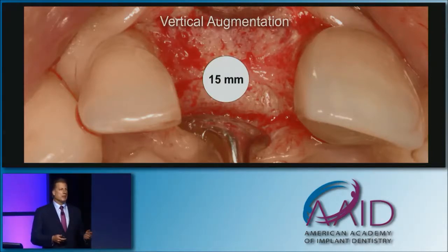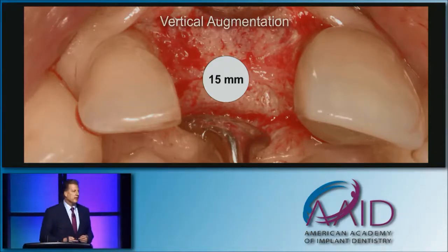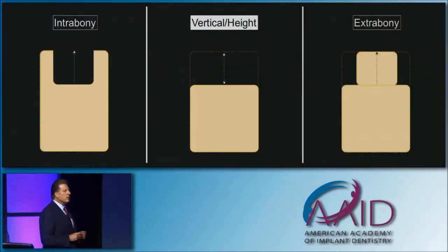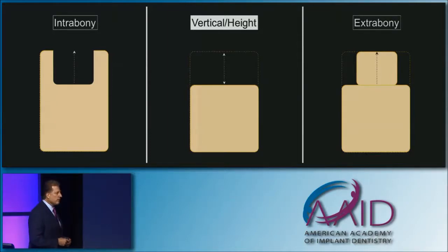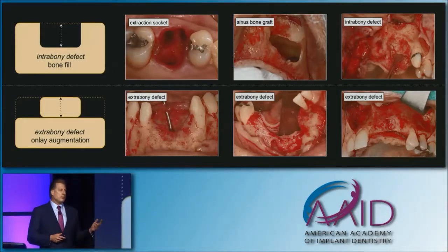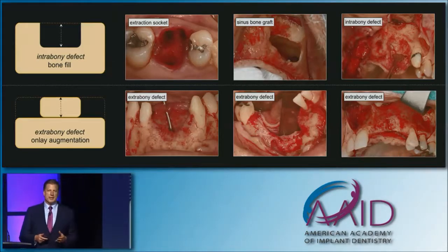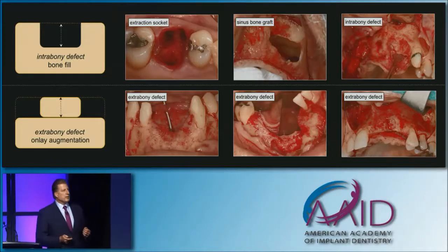And you might say, 'No, Craig, you didn't do that — you did a socket graft, 15 millimeters of a socket graft.' Well, that's an important point, because so many times I see from the podium people presenting cases where they do vertical augmentation on intrabony defects. These are very different than extra-bony defects when we talk about vertical augmentation. Intrabony defects include socket grafts, sinus grafts, and intraosseous bone defects in the ridge — very different than defects outside the bony housing.